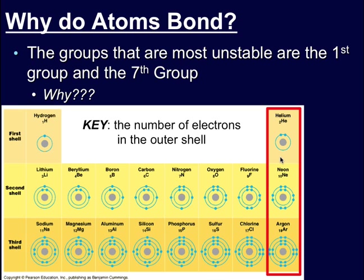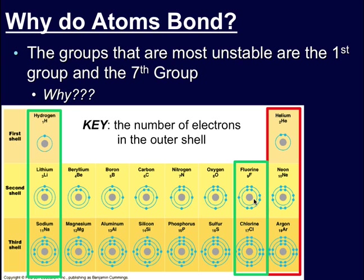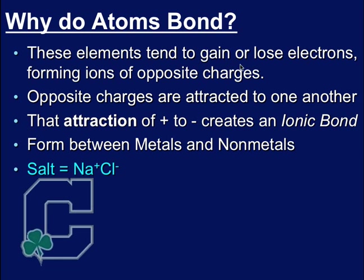Now, the groups that are most likely to bond are going to be the first group because they have one extra electron, and the seventh group because they need one extra electron. So, the fact that these electrons tend to gain or lose electrons gives them an opposite charge, and those opposite charges cause them to be attracted to one another. The attraction of positive and negative creates something called an ionic bond. Ionic bond occurs between metals and nonmetals because metals become positively charged because they lose electrons. Nonmetals become negatively charged because they gain electrons.